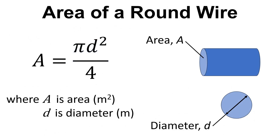Quite often our materials are shaped into round wires, and we can use this equation to work out the cross-sectional area of a wire. A equals pi D squared over 4, where A is the cross-sectional area and D is the diameter. We can use A equals pi R squared, but often we're given the diameter so it's more convenient to use this form of the equation.